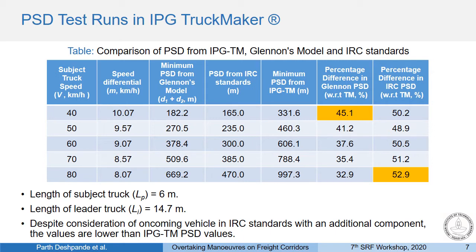The speed range considered is 40 to 80 km/h, typical for trucks on high-speed facilities. The speed differential between impeder and passer varies with speed, as first introduced in Glennon's model. The resulting PSD values show very large differences — around 45% for Glennon's model and over 50% for IRC standards — compared to Truckmaker values. Both are lower than IPG Truckmaker, which poses a high safety risk. Notably, the IRC model includes D4 yet still yields lower values.